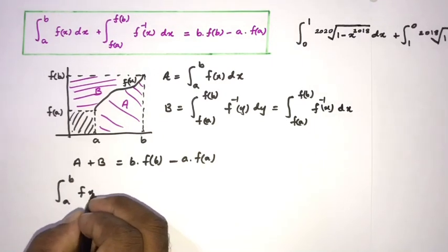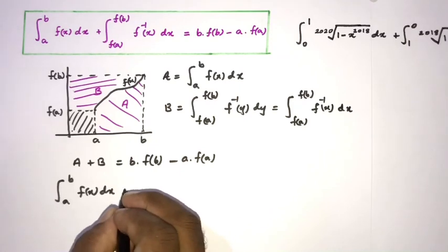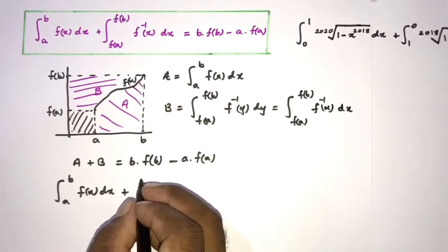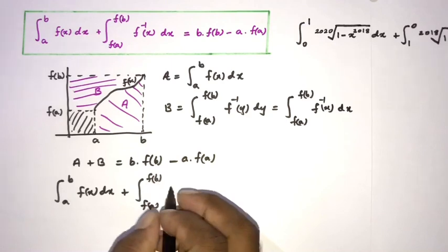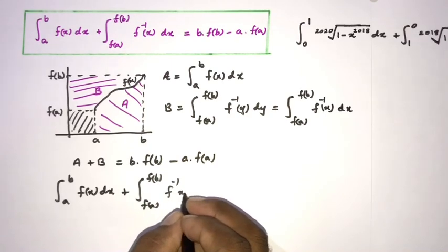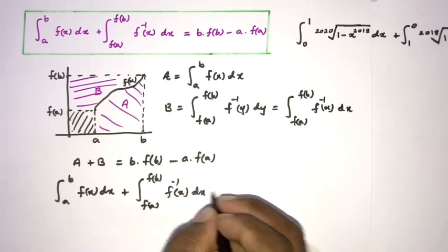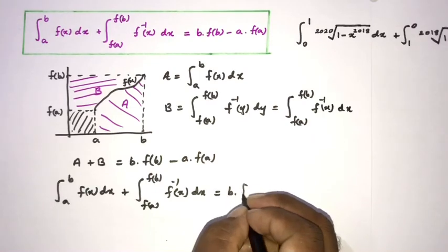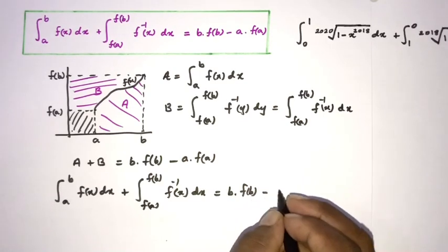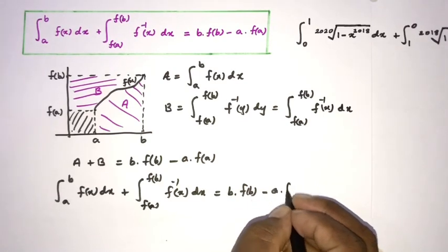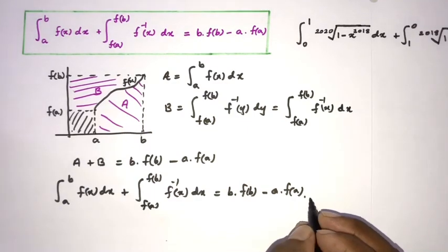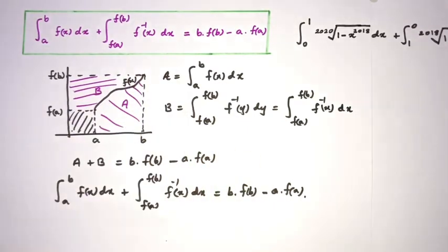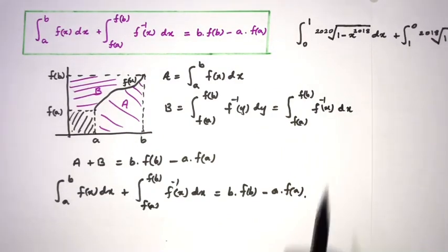So we can write: the integral from a to b of f(x) dx, plus the integral from f(a) to f(b) of the inverse of f(x) dx, equals b times f(b) minus a times f(a). This is the proof of this formula.